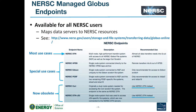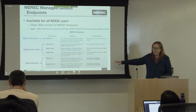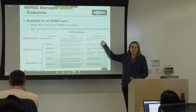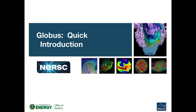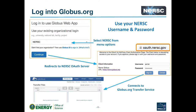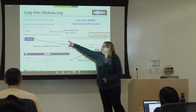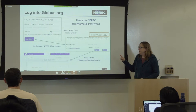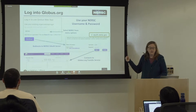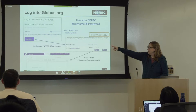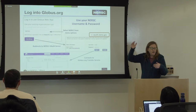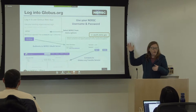We have a couple of other endpoints that are obsolete — you'll still see them as options, but they'll basically refer you back to the DTN endpoint. To get started with Globus, point your browser at globus.org and log in. It'll give you the Globus web app with some choices: you can log in either with the Globus ID, or use the pull-down menu that lists all the various institutions that allow authentication via Globus, and choose NERSC from there.